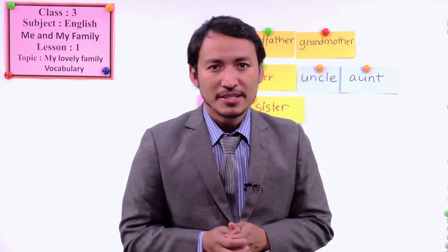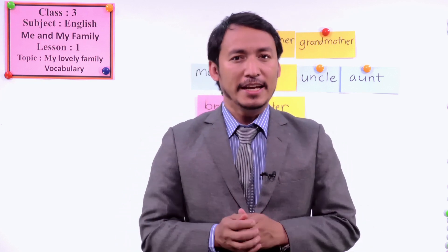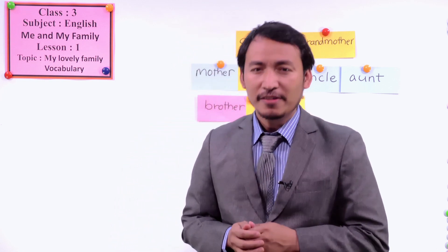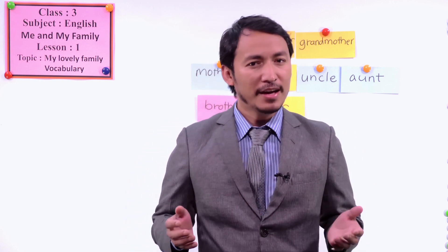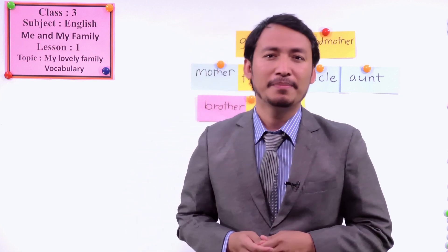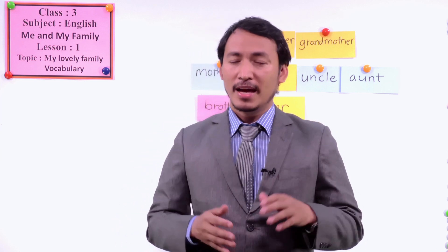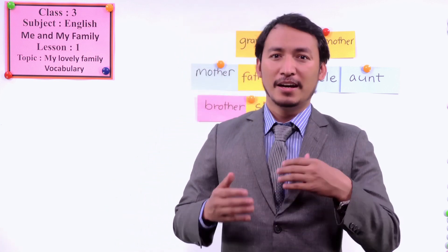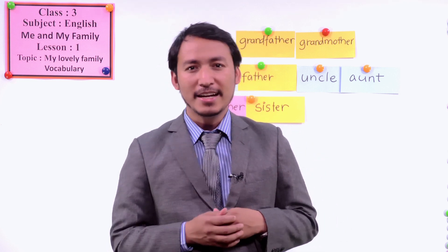Alright, welcome students to our classroom. I'm going to talk about English subject of your grade 3 English book. We have already started a lesson about my family, me and my family. And now this is the second lesson. You can open your book on page number 8, and we are going to do some exercises from there. I have already sang a song from your book — you can remember the tune. We have already sung a song together, right?